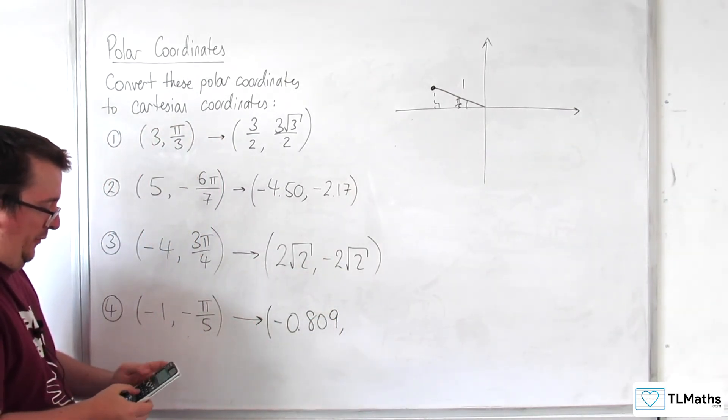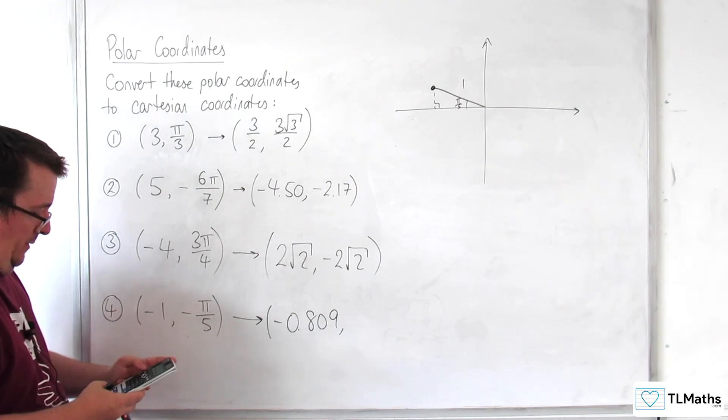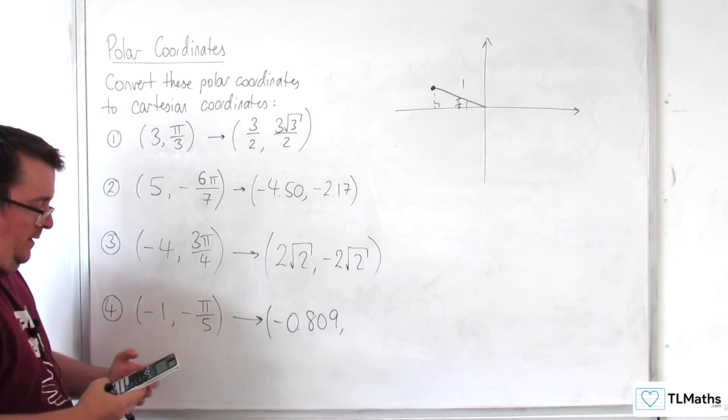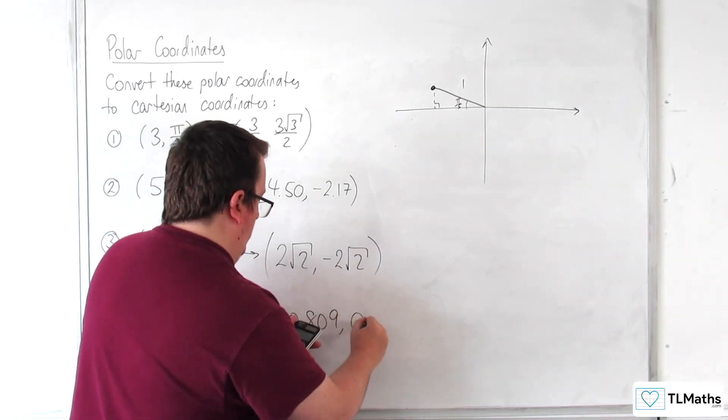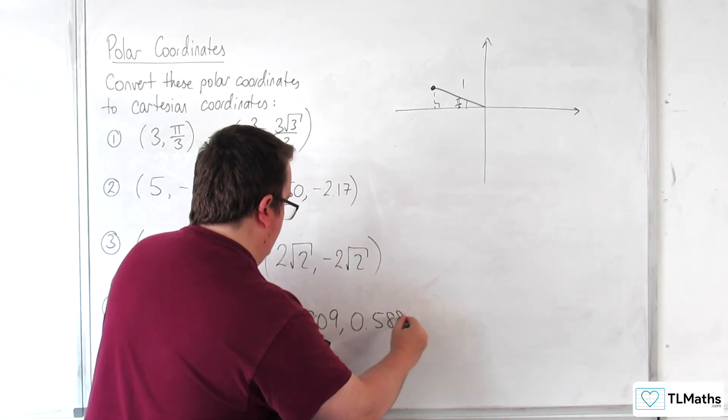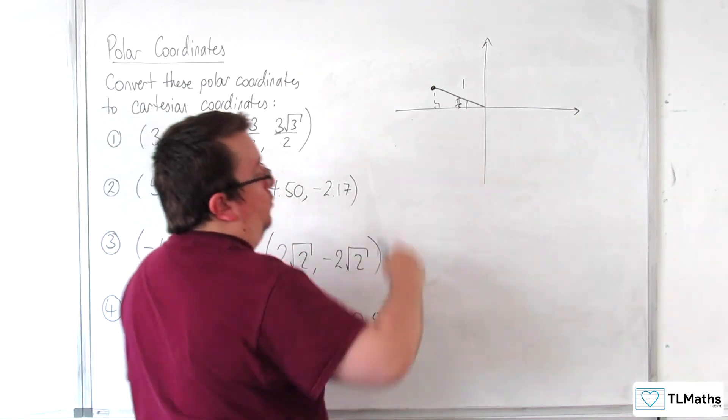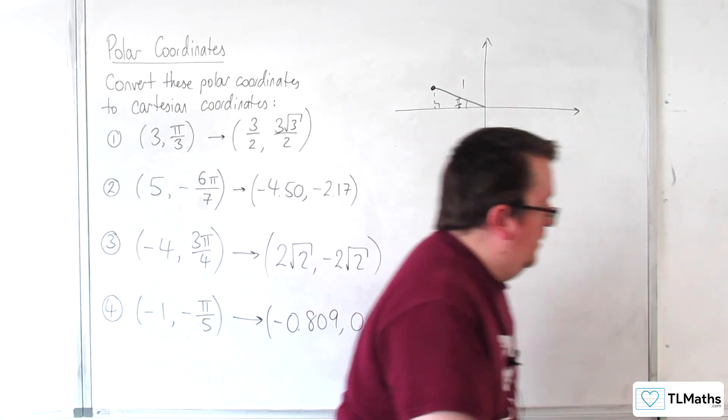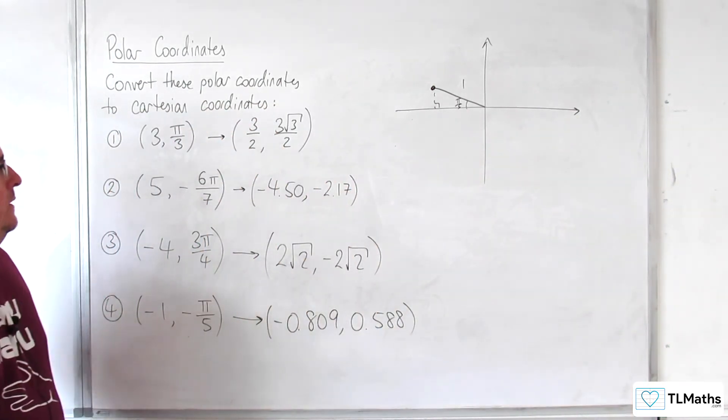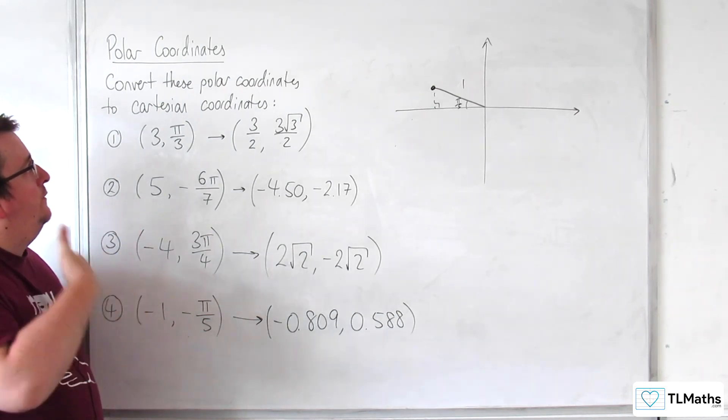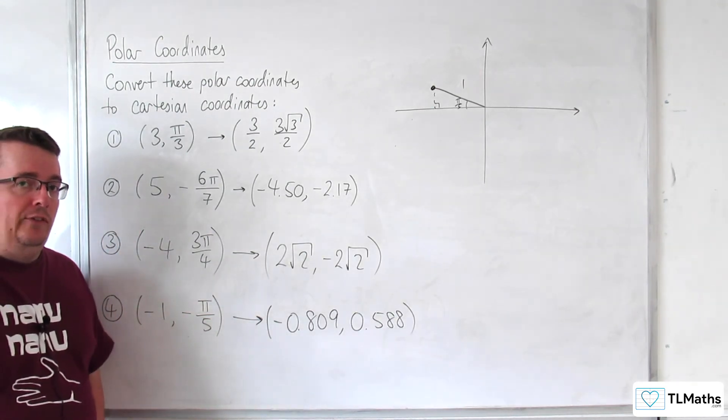And then minus 1 times sine of minus pi over 5, which gets us 0.588 to three significant figures. Okay. And that checks out with where we've placed the point on our grid. Okay. So, this is how we can convert from polar coordinates to Cartesian coordinates.